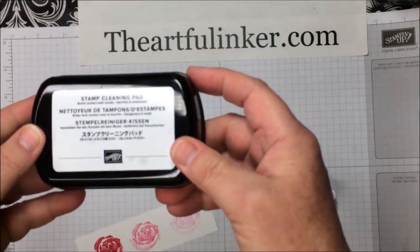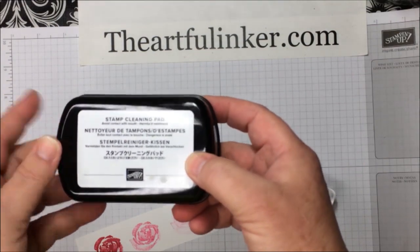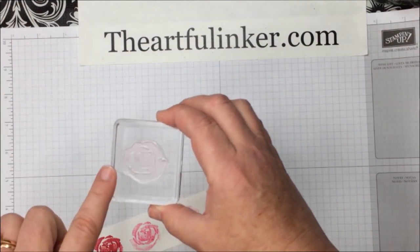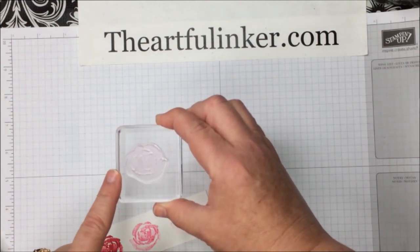So that is the stamp cleaning pad from Stampin' Up, the one simple trick to get those hard-to-clean ink colors off your stamps.